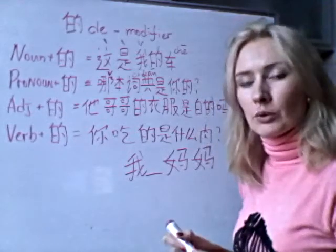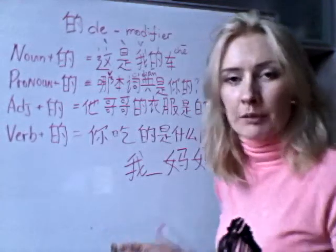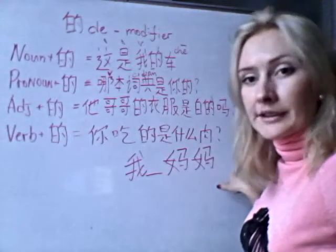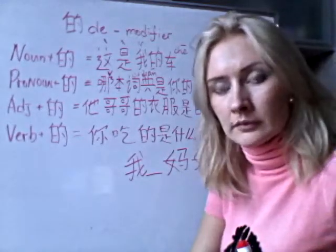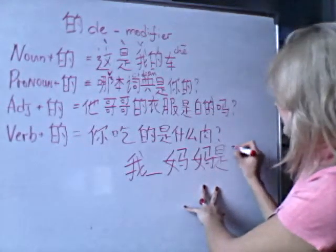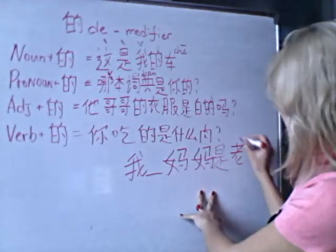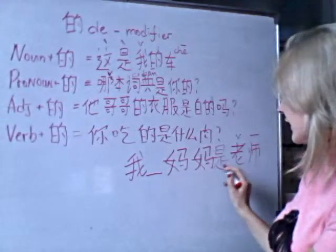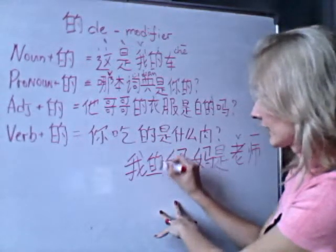So they will not accept just 我妈妈 alone. Maybe you will put 我是妈妈 (I am a mother) or 我的妈妈 (my mother). But of course it will be different if you have the full sentence. For example, if you say 我妈妈是老师, so 我妈妈是老师 means 'my mother is a teacher.' In this sentence, you don't need to put 的 here, because it is already clear enough that you are talking about your mother.